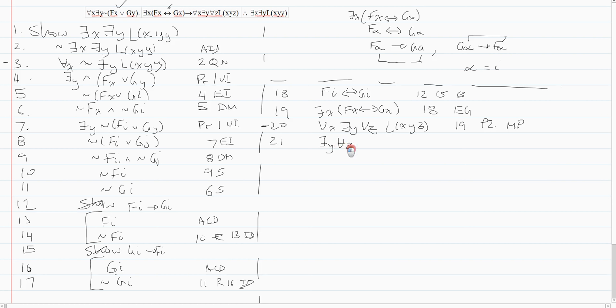So on line 21 I will just UI my for all X away. And I get there exists a Y for all Z, L, X, Y, Z. I just left the X as X. That's line 20 UI. And I did that so that I could EI immediately. And I get for all Z, L, X, I and J are taken. So I'll take K, Z. And that's 21 EI.